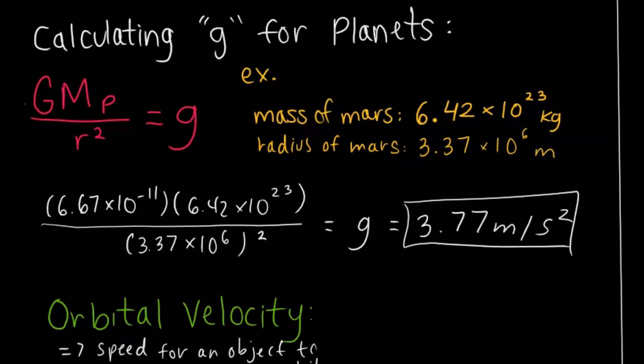All right. So now let's talk about how to calculate little g for planets. So we know that little g on Earth is negative or 9.8 meters per second squared. So how do you calculate that for other planets? So the equation for that is just the gravitational constant times the mass of that planet divided by its radius squared. So here's an example for Mars. We take the mass of Mars, we multiply it by the gravitational constant on the top, and then the radius of Mars, we square it. And we find that the little g for Mars is 3.77 meters per second squared.